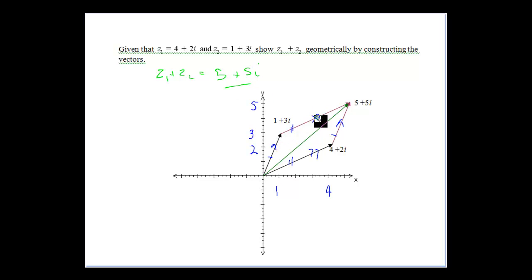Again we've done our parallelogram here. We've taken our vectors for 1 plus 3i here for z2 and made it a free vector. Put it to the tail of 4 plus 2i. So the tip to tail there at that point. Tip to tail here as 4 plus 2i as a free vector. And they've both matched up at 5 plus 5i. So they match up.